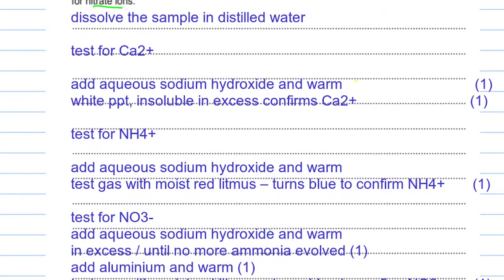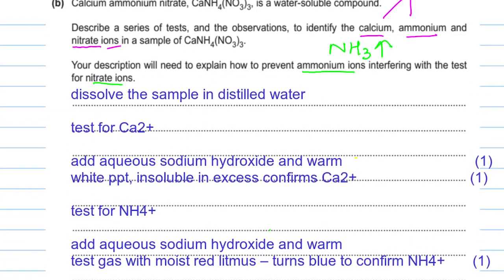The division of marks in the marking scheme is as follows. First of all, dissolve the sample in distilled water. For the test for calcium ion: add aqueous sodium hydroxide and warm. After adding aqueous sodium hydroxide, white precipitates will form that are insoluble in excess. This confirms that calcium ions are present.